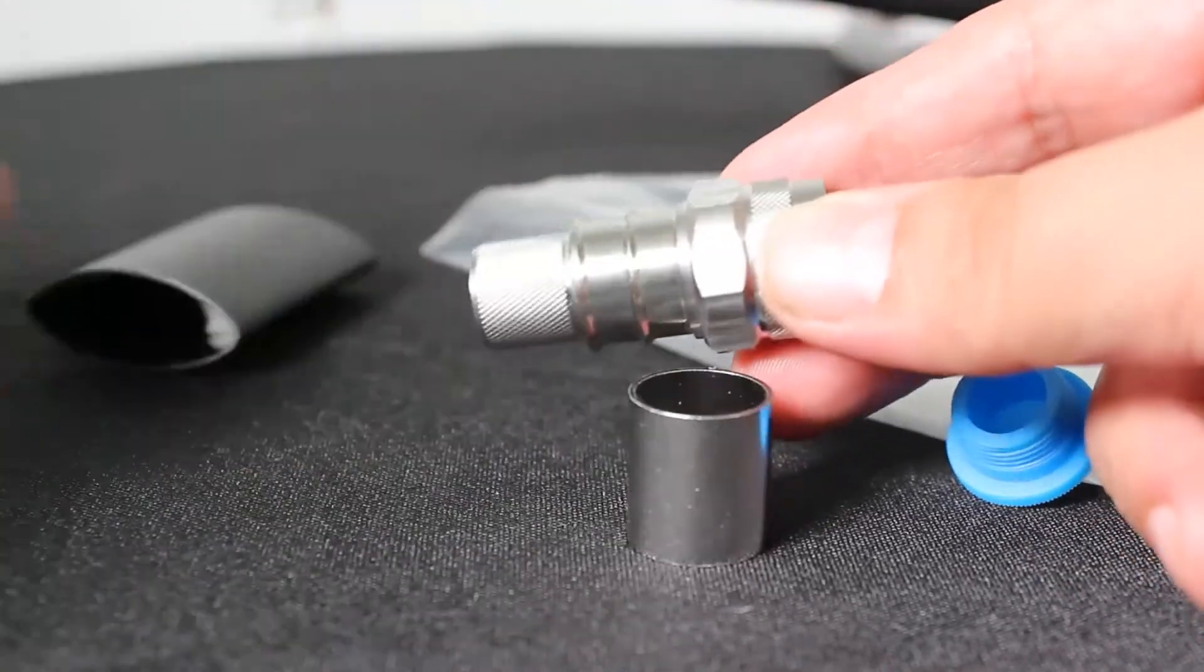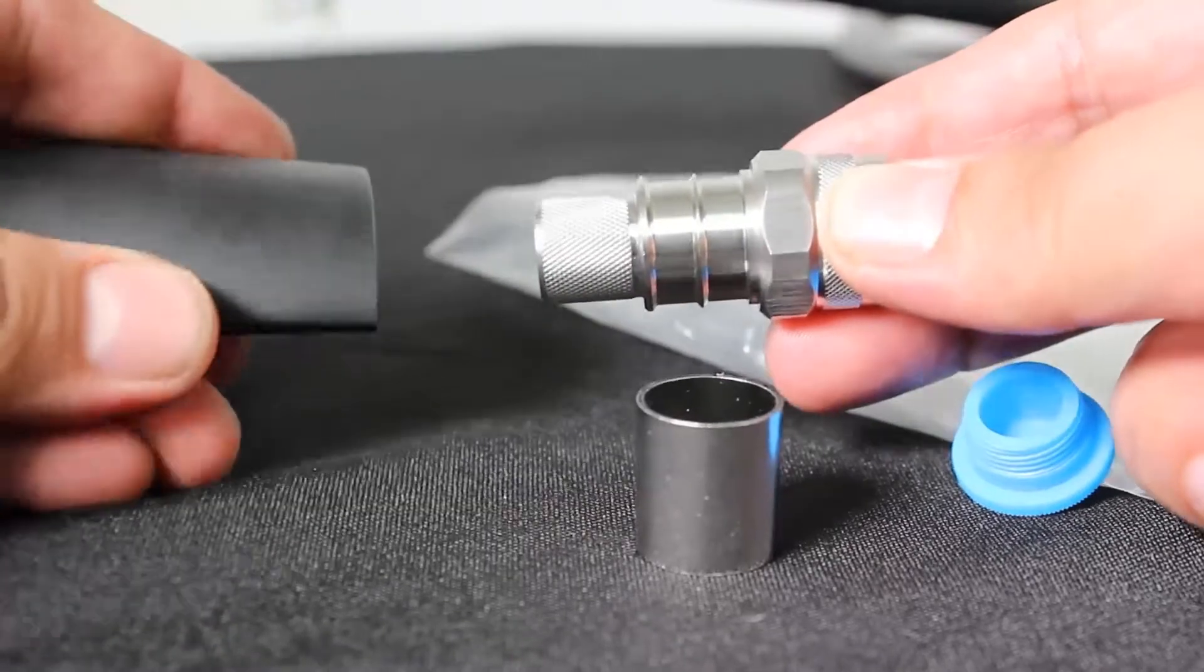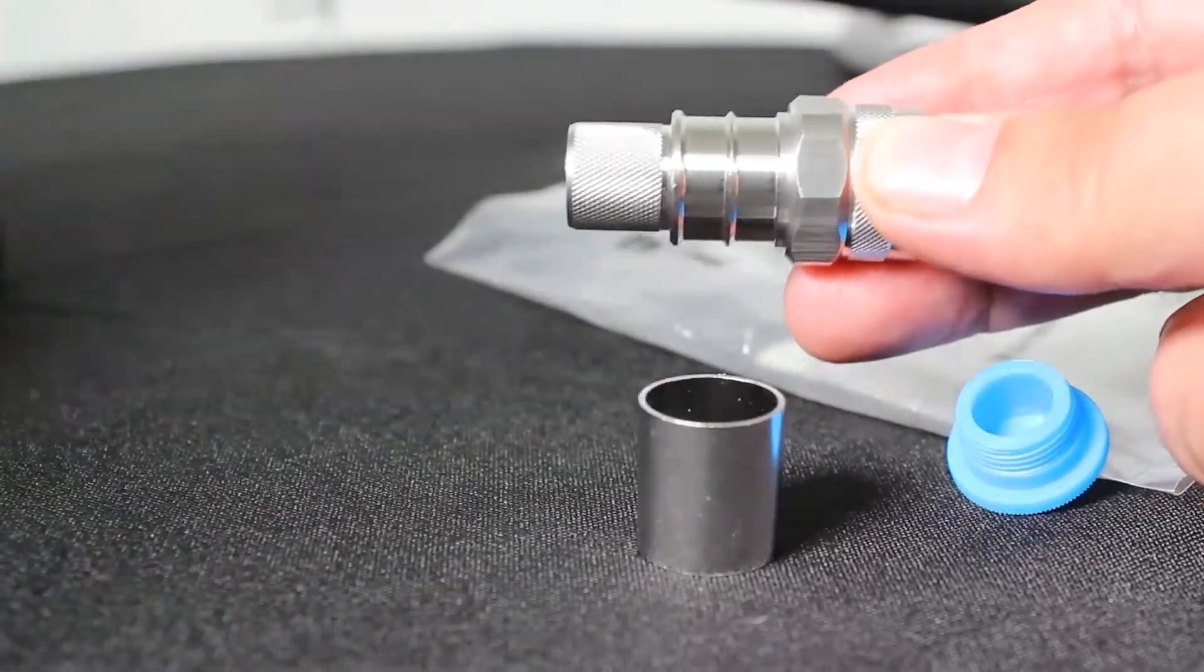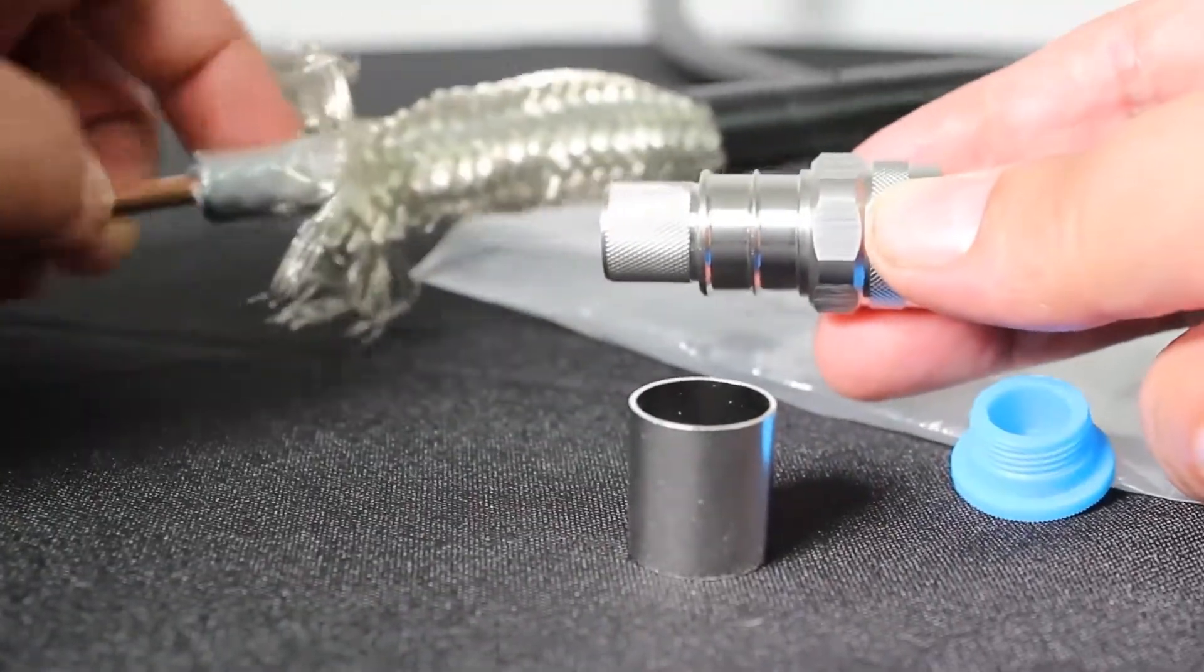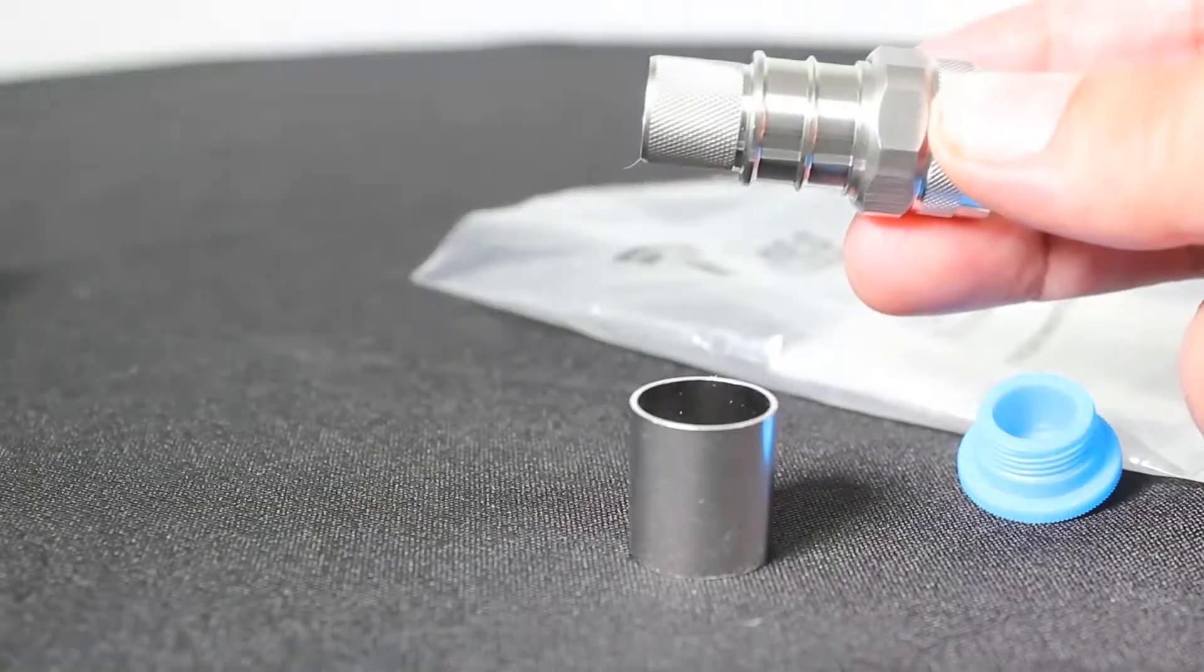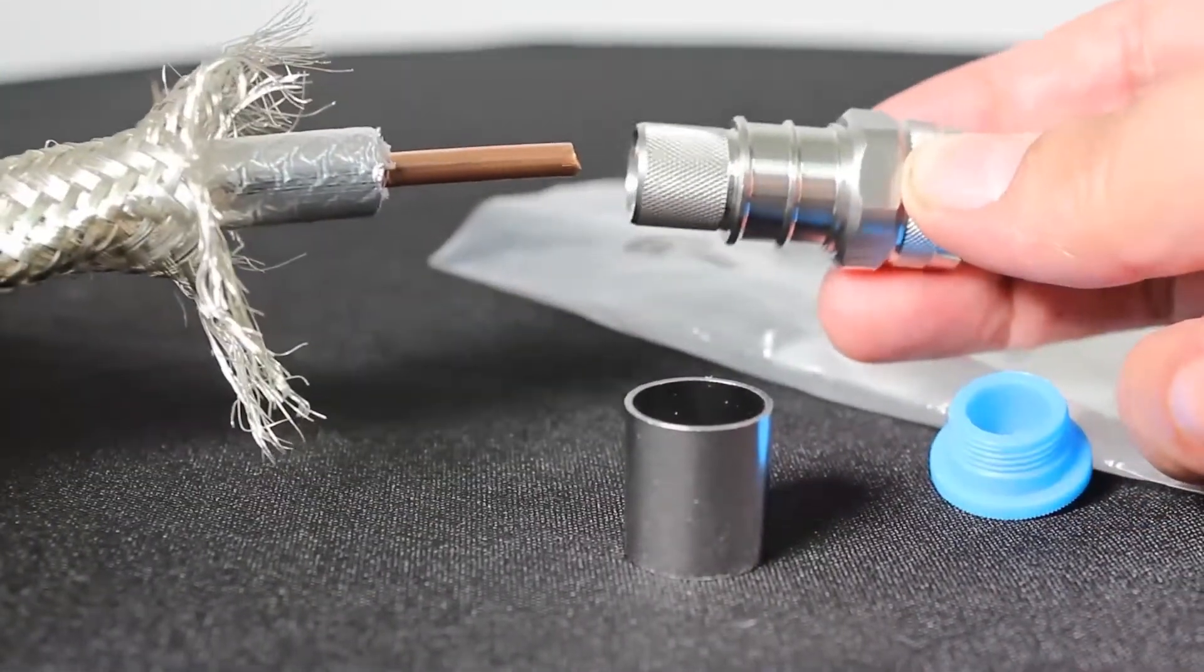It also includes a little piece of heat shrink here for you. This is for the LMR cable. If you've never worked with this stuff before, the cable is 50 ohm. It is quite a big cable.